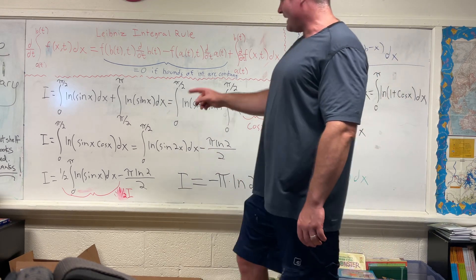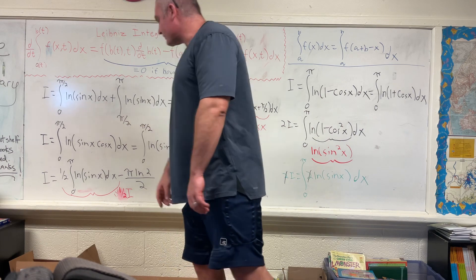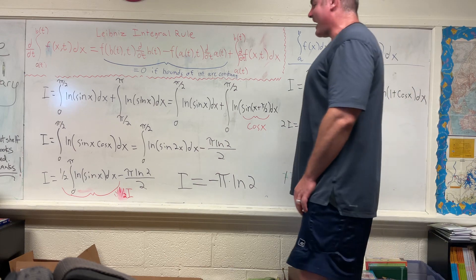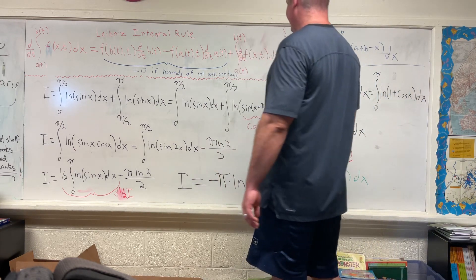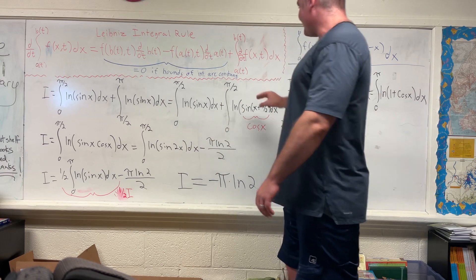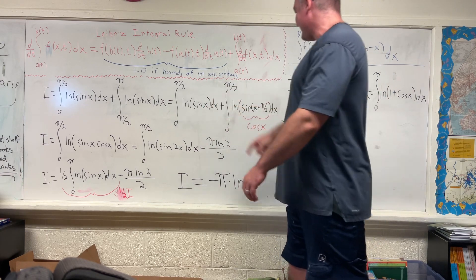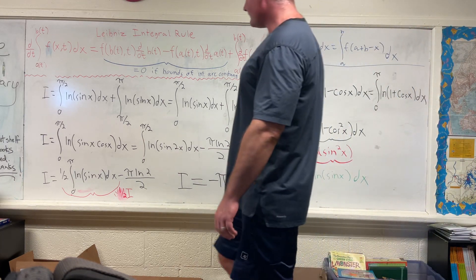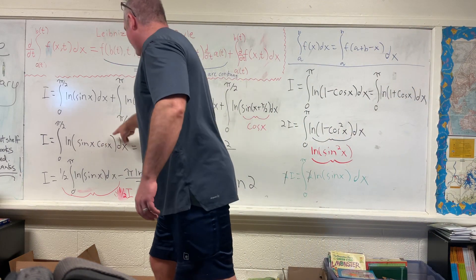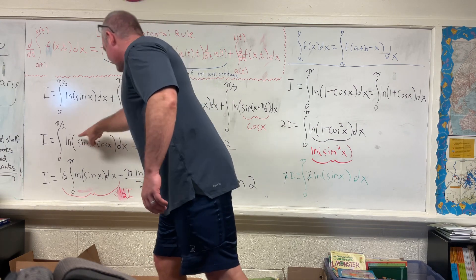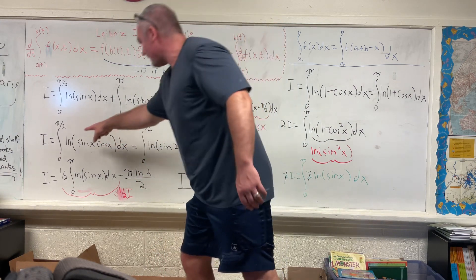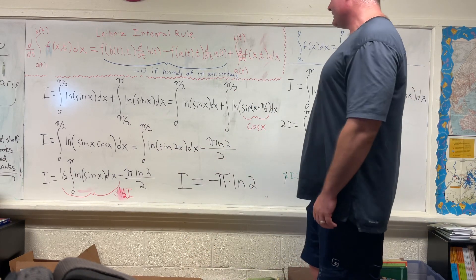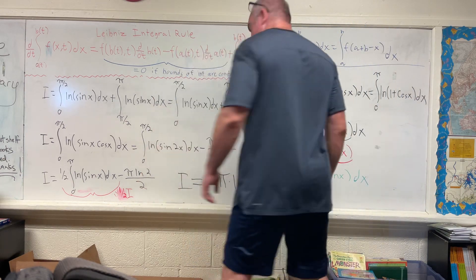I bring those two integrals together using log properties to get I equal to the integral from zero to pi/2 of the natural log of (sin x · cos x) dx. You'll notice this almost represents sin(2x), because two times sin x cos x equals sin(2x). So I want to insert a factor of two to make use of that.